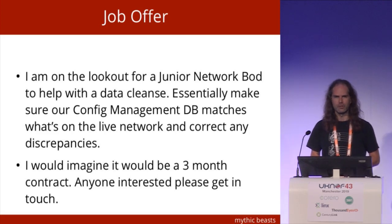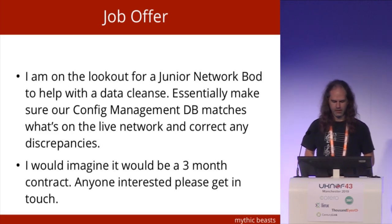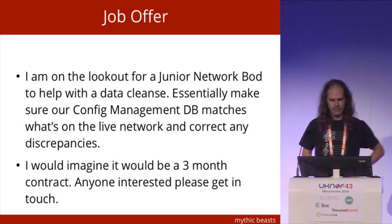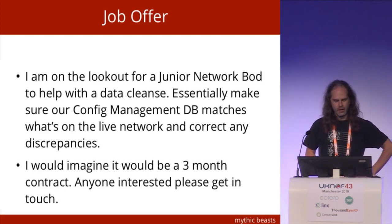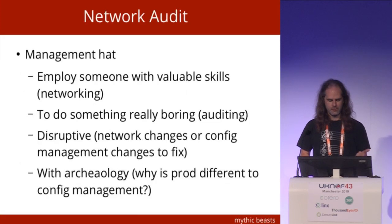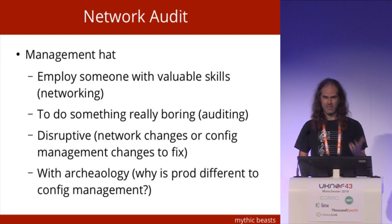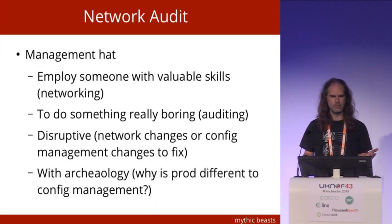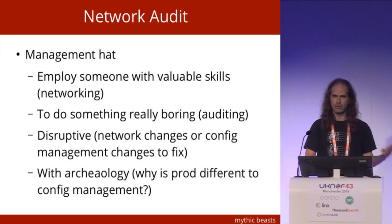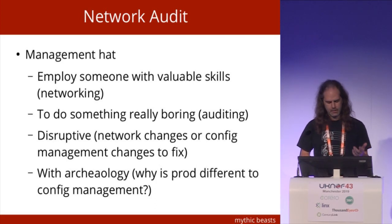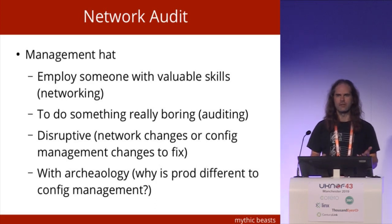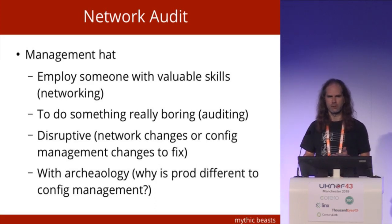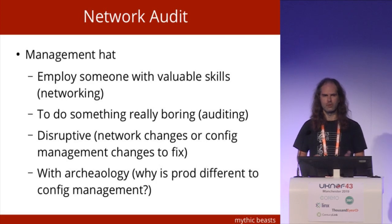And I thought, that's a brilliant opportunity, I'm getting in contact straight away. No, I didn't actually. That's an awful job. That's someone who's got valuable skills of networking doing something really boring, which is spending three months auditing config. It's potentially disruptive because when your audit discovers a problem, you either need to fix your config system or fix the production network, and it involves a whole load of archaeology. Why is production different to what our config management said it should be? Who put the change in? Why is it there? If I take it out, will everything break?